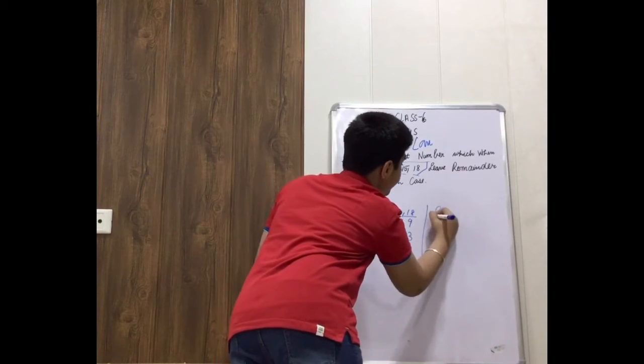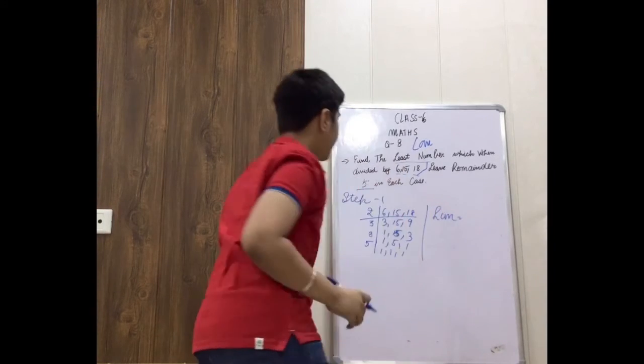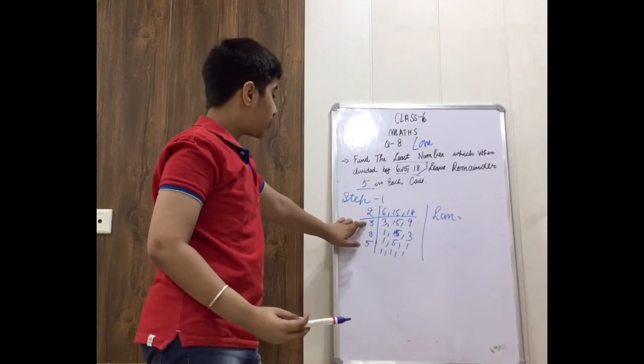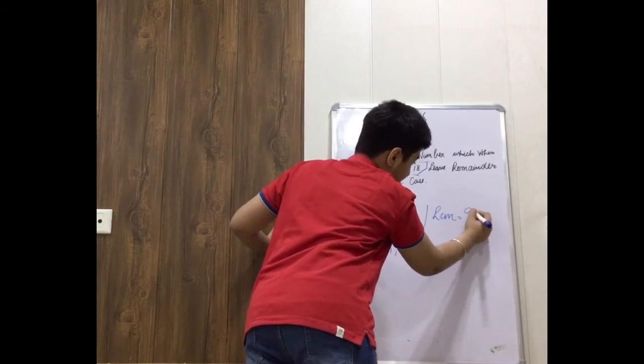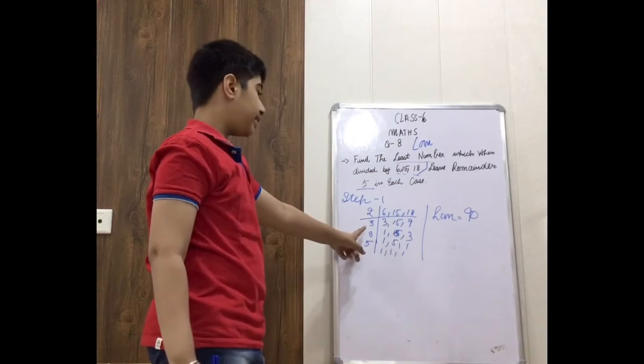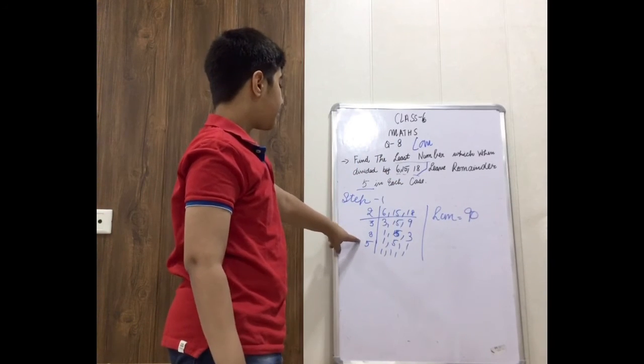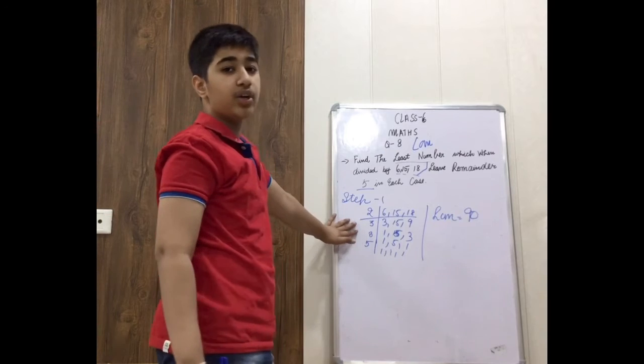So the LCM we will be getting will be 2 into 3 into 3 into 5, which is 90. So it is 3 into 3 equals 9, 9 into 5 equals 45, 45 into 2 equals 90.